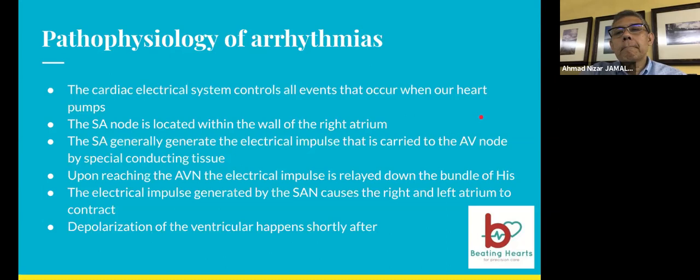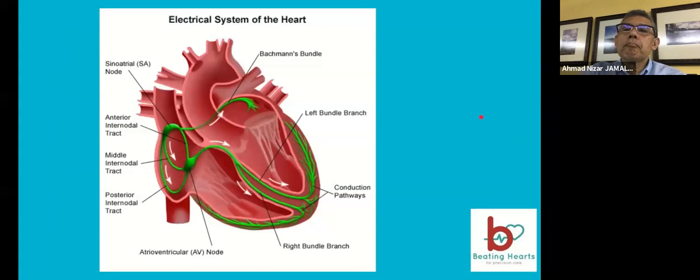Looking at the cardiac electrical system — the basis is like a wiring system. The SA node is the first switch, located within the wall of the right atrium. The SA node generates the electrical impulse carried to the AV node by special conducting tissue. Upon reaching the AV node, the impulse is relayed down the bundle of His. The SA node impulse causes the right and left atrium to contract, then depolarization of the ventricle happens shortly after.